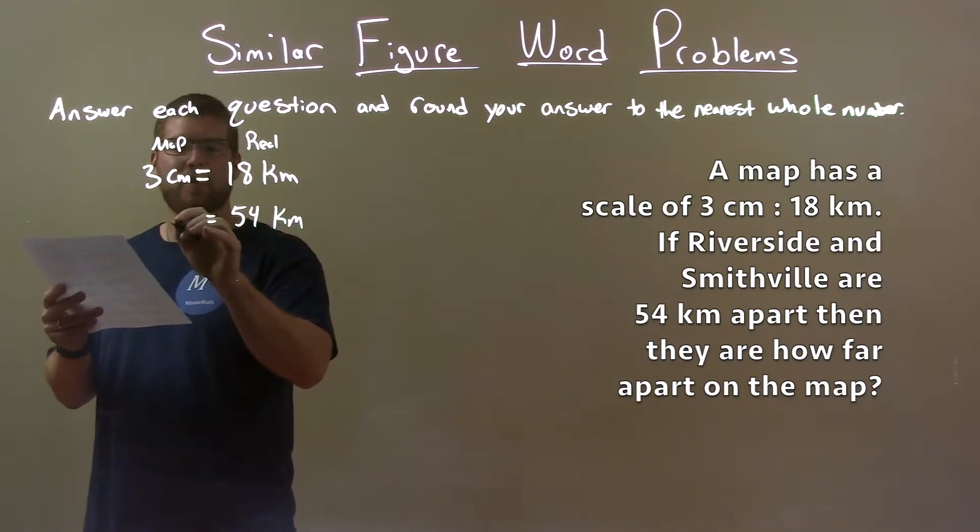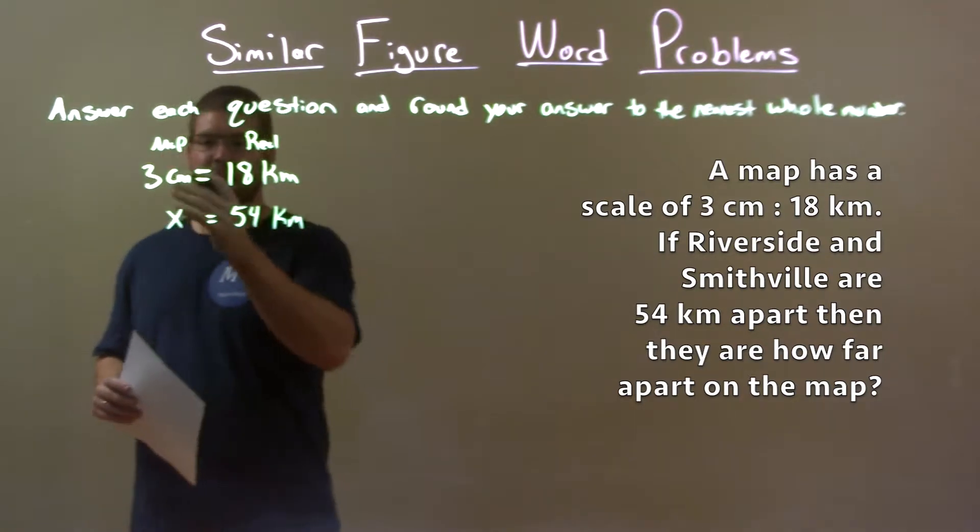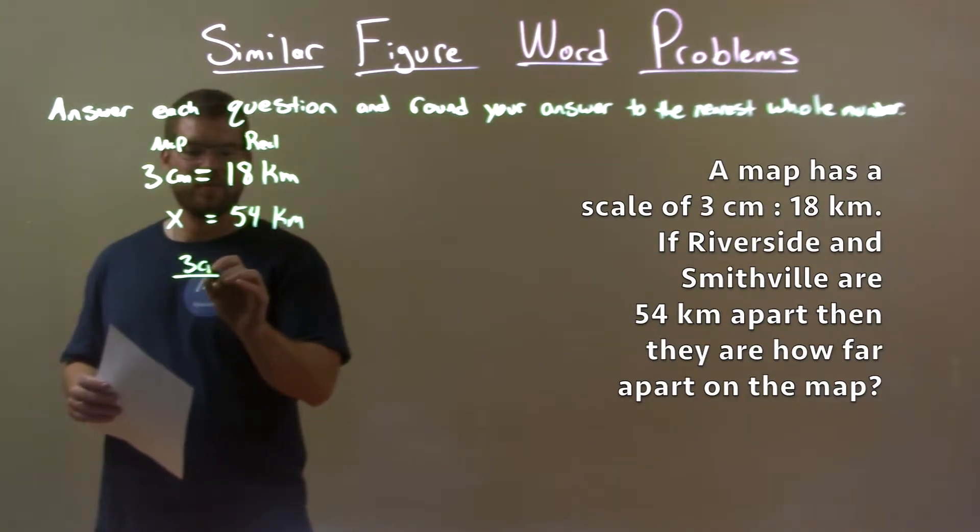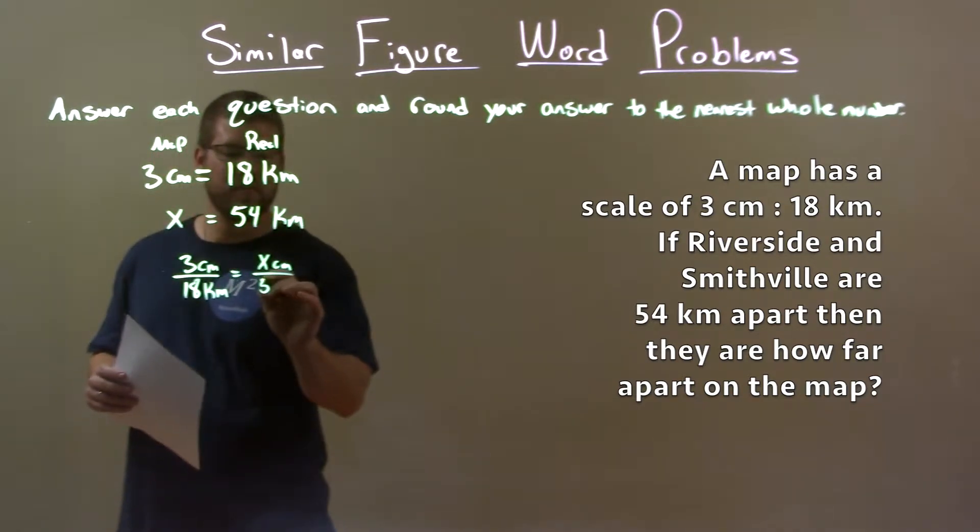Now we want to see how far apart they are on the map. Let's set up a proportion. 3 centimeters to 18 kilometers should be the same ratio as x centimeters to 54 kilometers.